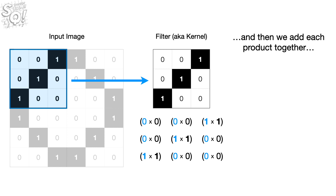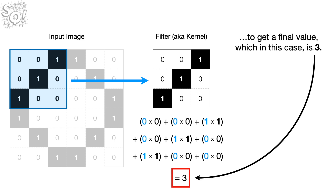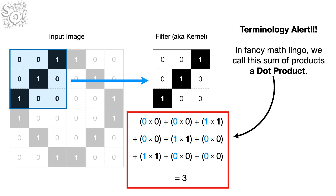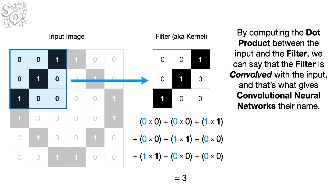We add each product together to get a final value — which in this case is three. In fancy math lingo, we call this sum of products a dot product. By computing the dot product between the input and the filter, we can say that the filter is convolved with the input, and that's what gives convolutional neural networks their name.